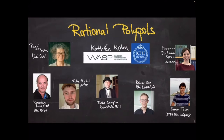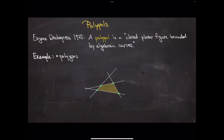Let me start with what a polypole is and the motivation. This was very different from the positive geometry story. There was Eugene Wachspress in 1975 who wrote a nice book in which he somewhat loosely defined polypoles to be closed planar figures bounded by arcs, with some additional conditions.